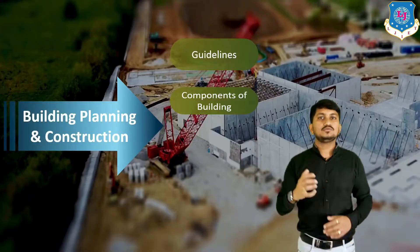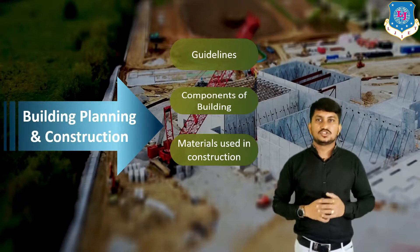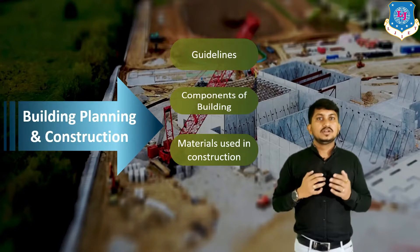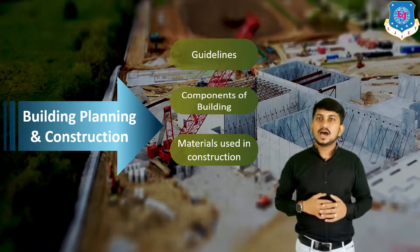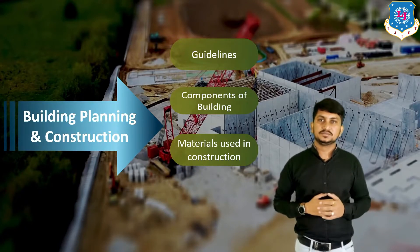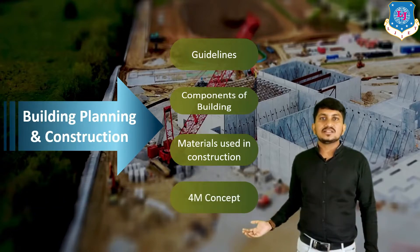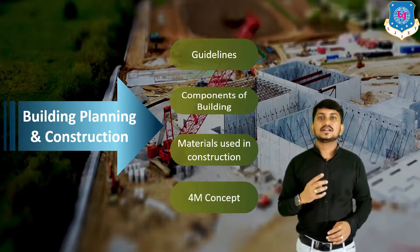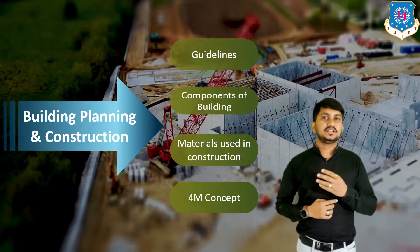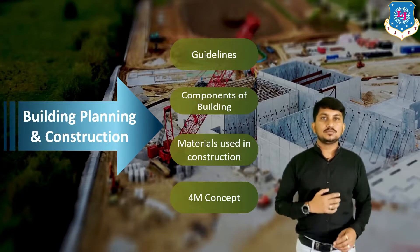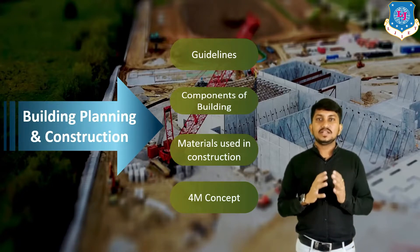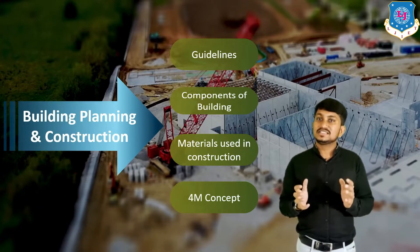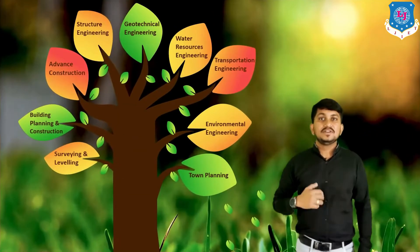Next we need to understand the materials used for construction. Different materials like cement, sand, aggregates, stone, steel, wood, concrete, etc. are used for construction of buildings. We also can't forget the concept of the four Ms used in any building construction: Men, Machine, Money, and Materials. The construction activity should be managed so that the best quality construction is achieved in the most economic way by organizing these four Ms.